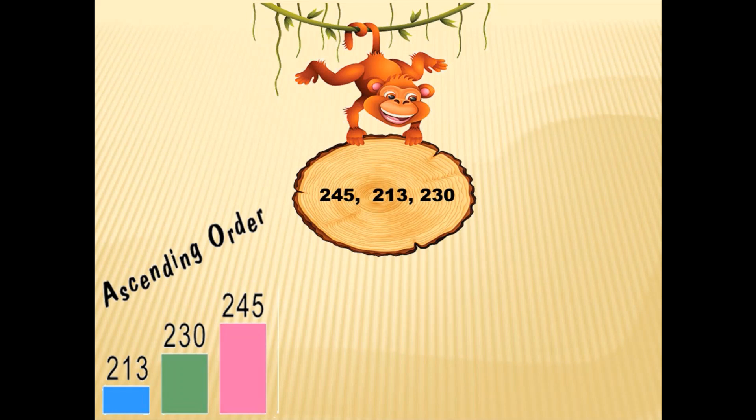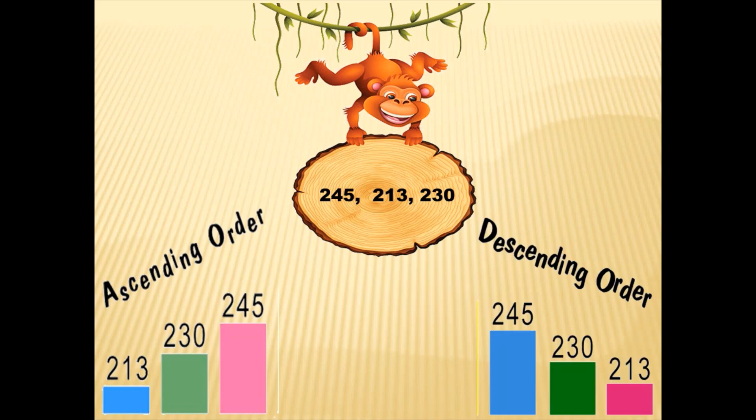Now we will arrange the descending order. Remember, descending order means from big to small. So the biggest number here is 245. Now between 213 and 230, the biggest number is 230. And then we are left with 213. And that's how we have arranged the numbers in their descending order.